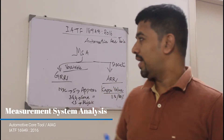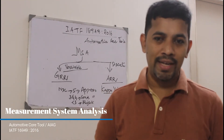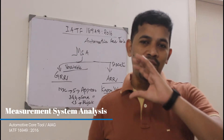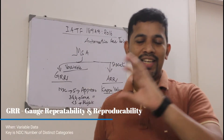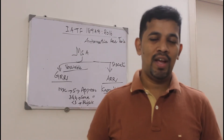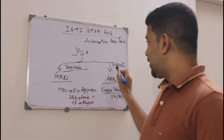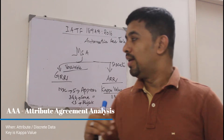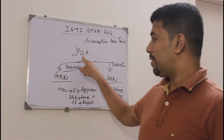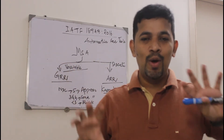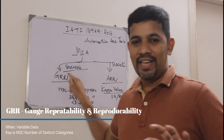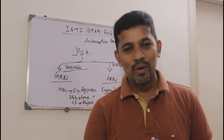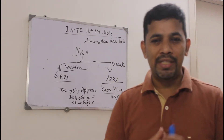For example, if your data is variable data — meaning data which is measurable, also called continuous data — you need to use GRR: Gauge Repeatability and Reproducibility. On the other side, if you have discrete data, also called attribute data, which you can count or classify, then you use Attribute Agreement Analysis. So MSA has two major branches: GRR for variable data, and Attribute Agreement Analysis for discrete data.